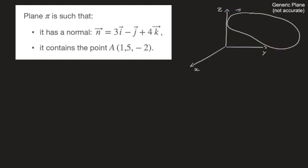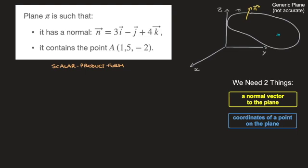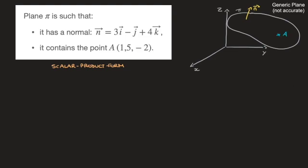It looks a bit like a flying pancake. We'll start with the scalar product form. To write a plane's equation in its scalar product form, we need two things. First of all, we need a normal to the plane, which is the first thing we're given here. Secondly, we need the coordinates of a point contained in the plane, and that's the second thing we're given here. I can add those two things to my diagram: a normal n drawn here in yellow, as well as the coordinates of a point A contained in the plane.